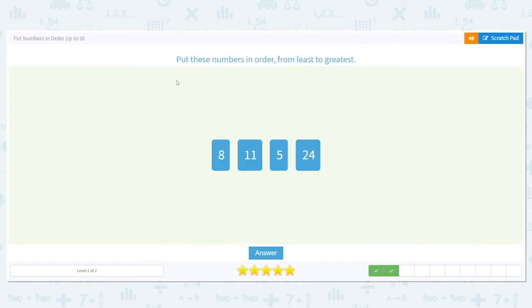Again, we're putting in order from least to greatest. 8, 11, 5, and 24. Which one would go first? Which is the least? The lowest. 5 is. Then 8. And I know these two are my lowest because they're single digits. These two numbers have two digits.